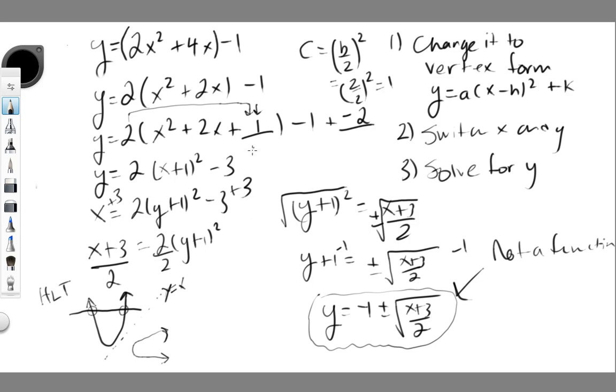So what you need to do is you need to restrict the domain of your original quadratic such that only one part of it is graphed. So if I were to do this and divide it by the axis of symmetry, which basically is right here, so that x-coordinate is my axis of symmetry. In our case, it's x equals negative 1.